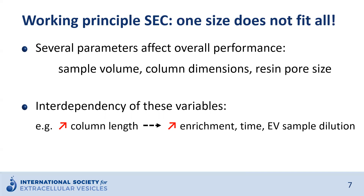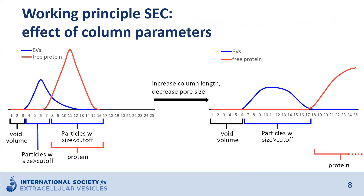For example, if you increase the column length, this will probably lead to increased EV purity. This will also lead to a longer time to elution and a larger elution volume, so an increased dilution of your EV prep. Here I have illustrated how increasing the column length, while at the same time decreasing the pore size of the beads, could lead to a better separation of all EVs — also the smaller ones — from the bulk of free protein. It does also result in increased sample diffusion, resulting in a larger number of fractions that need to be collected, 10 in this case, and thus an increased dilution of your EV sample.